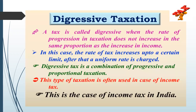Coming to the last type, degressive taxation: a tax is called degressive when the rate of progression in taxation does not increase in the same proportion as the increase in income. The rate of tax increases up to a certain limit, after which a uniform rate is charged. Degressive tax is a combination of progressive and proportional taxation. This type of taxation is often used in the case of income tax, and this is the case of income tax in India.